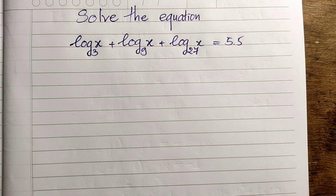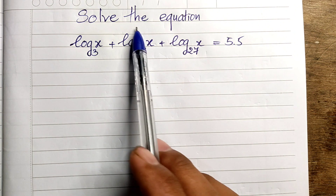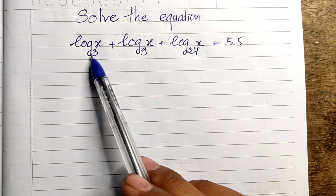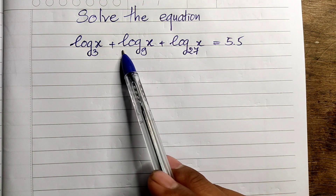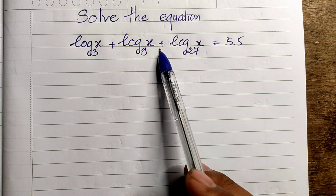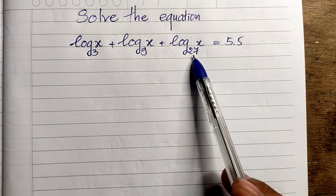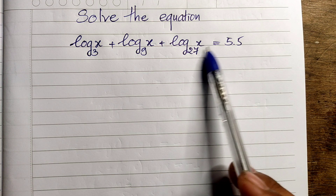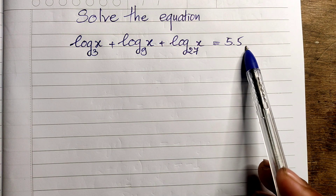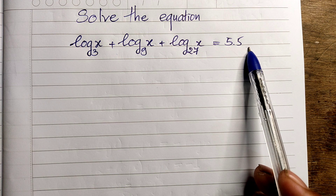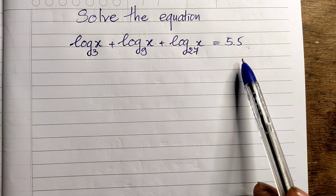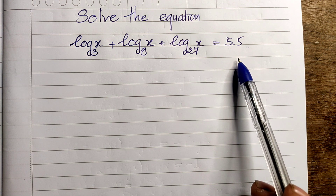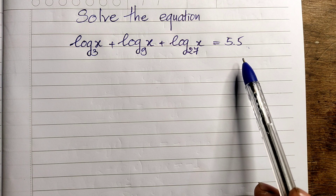Hello everyone, welcome to my YouTube channel. Today I have one exercise on paper: solve this equation. We have log base 3 of x, plus log base 9 of x, plus log base 27 of x, equal to 5.5. Do you know how to solve this? Please try it first.